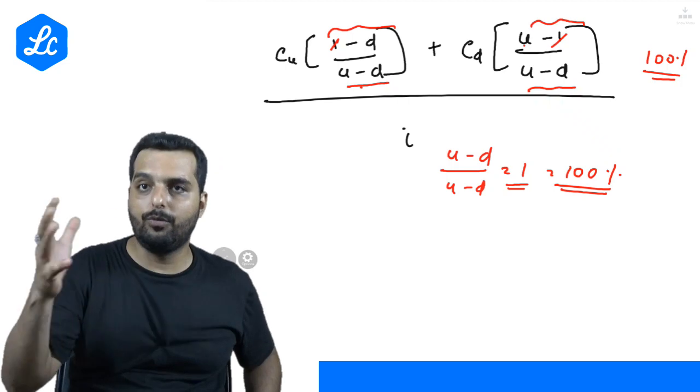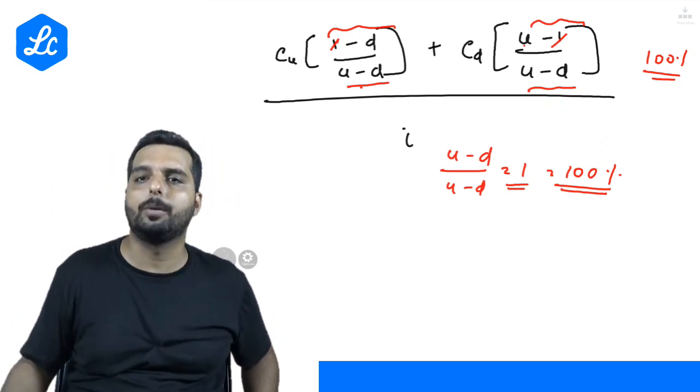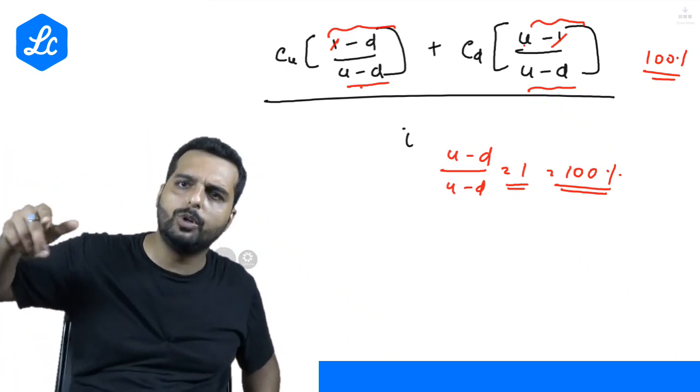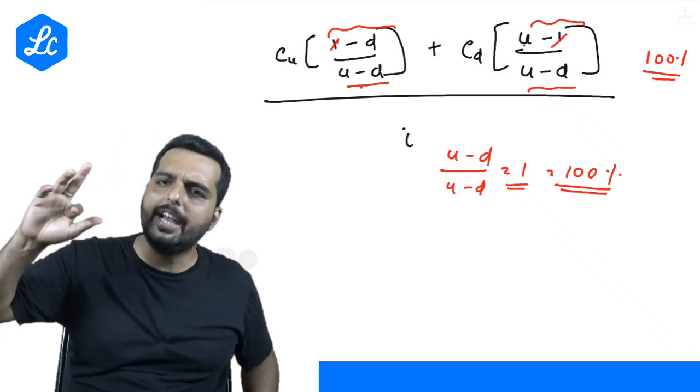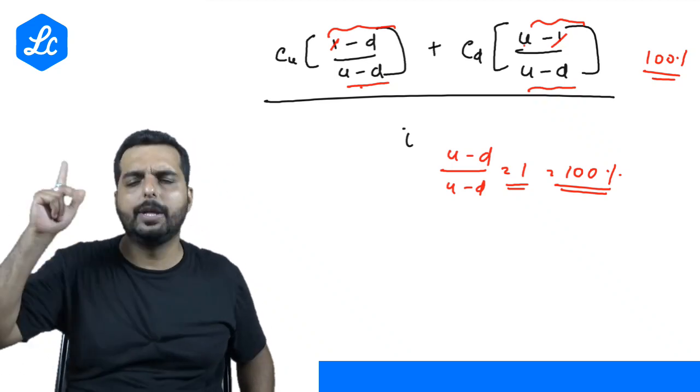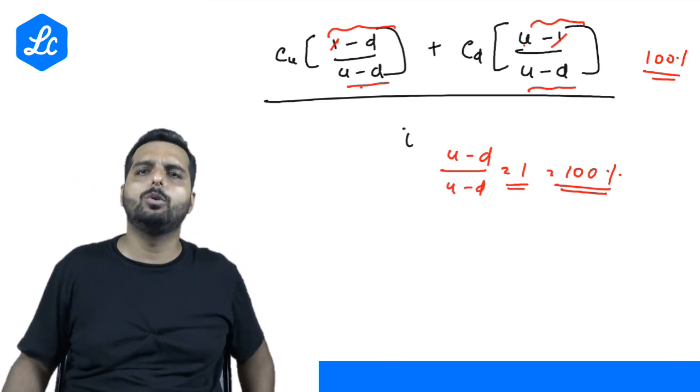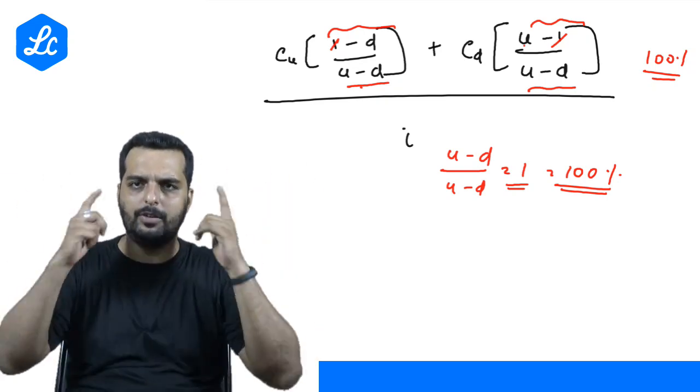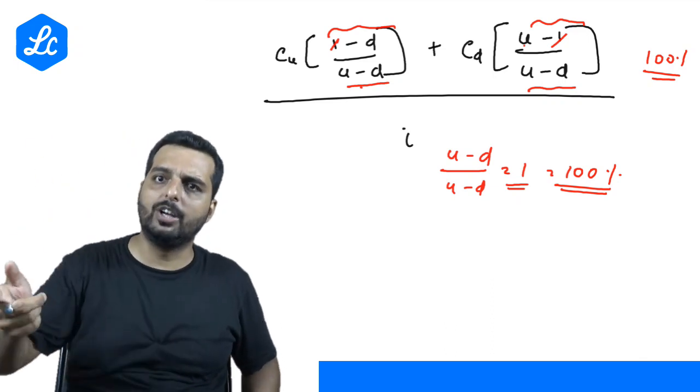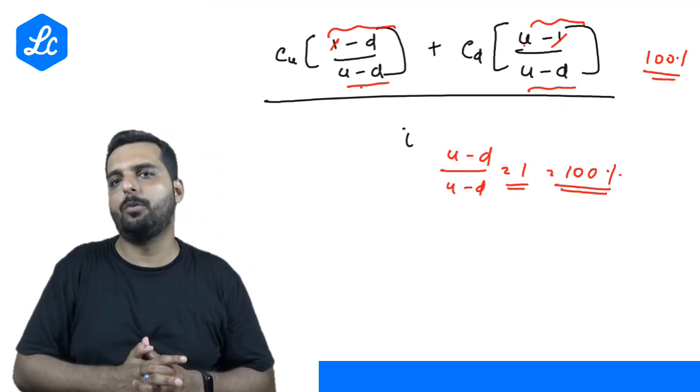Now, just to remember this whole formula, we will use a simple technique. i minus d divided by u minus d. We won't remember. So we will just repeat. We will call it as idud. Everyone repeat with me. idud, idud. And the other one is uiud, uiud. Now come on, repeat the whole formula with me with your common sense. Cu into idud plus Cd into uiud whole divided by i. With this, we are done with the logic of binomial model.